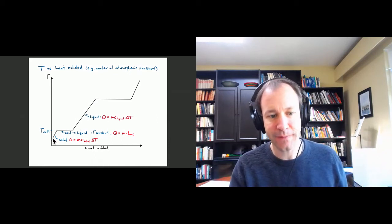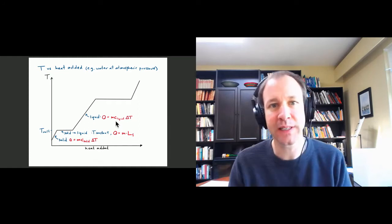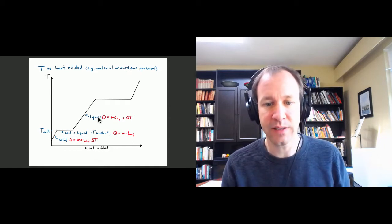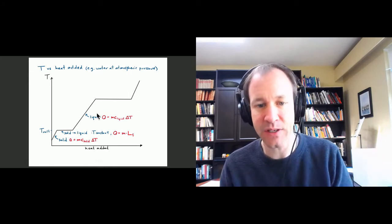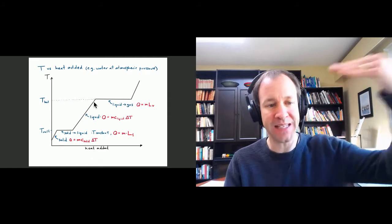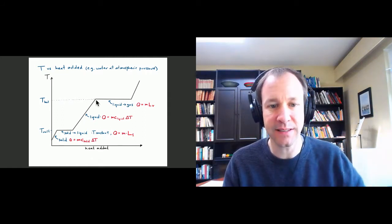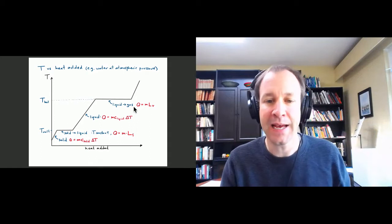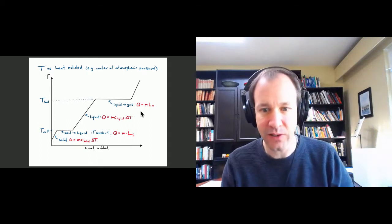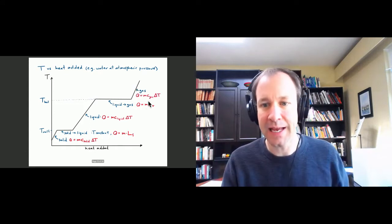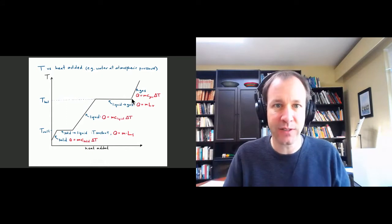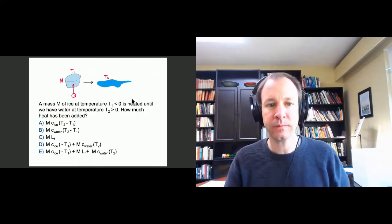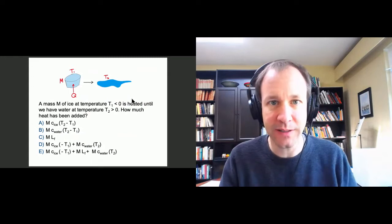Once you reach zero degrees Celsius, additional heat simply goes into melting the ice, so this flat part indicates temperature is not changing. We add heat equal to mass times the latent heat of fusion until all ice becomes liquid. Then the liquid heats up, with a slope that may differ from the solid because the specific heat for liquid is generally different. At the boiling point — 100°C — temperature stays constant again as water boils off, requiring mass times latent heat of vaporization. Any additional heat then goes into heating the gas molecules.